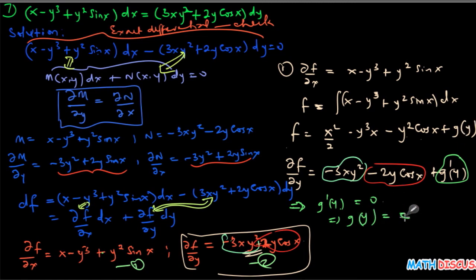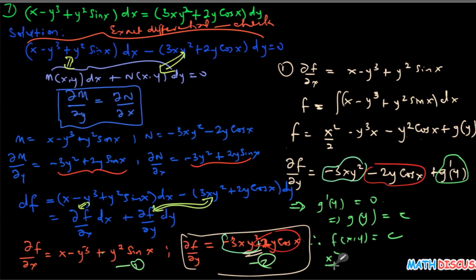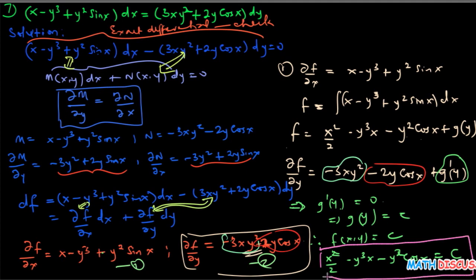Since g(y) equals c, the general solution of the differential equation is f(x,y) equals c, which gives us: x squared over 2 minus y cubed x minus y squared cosine x equals c. That is the general solution.